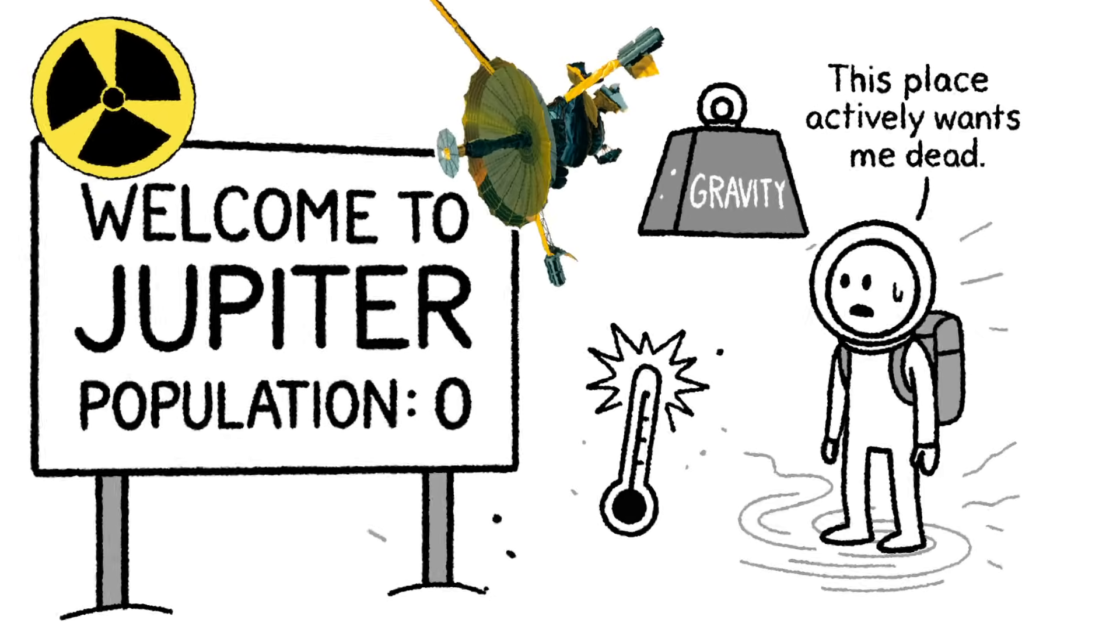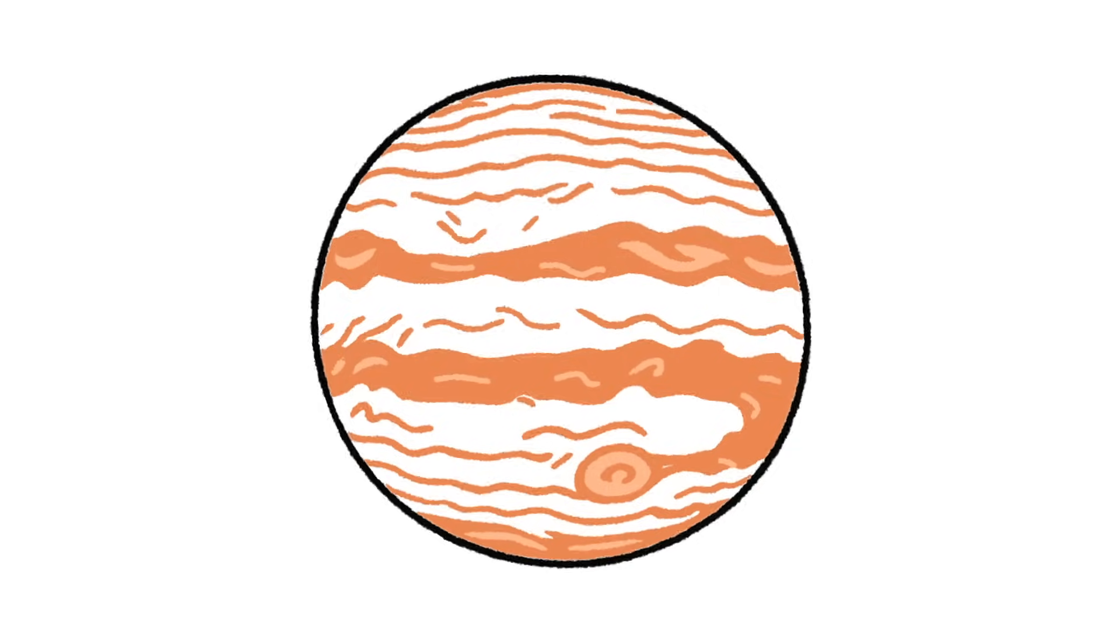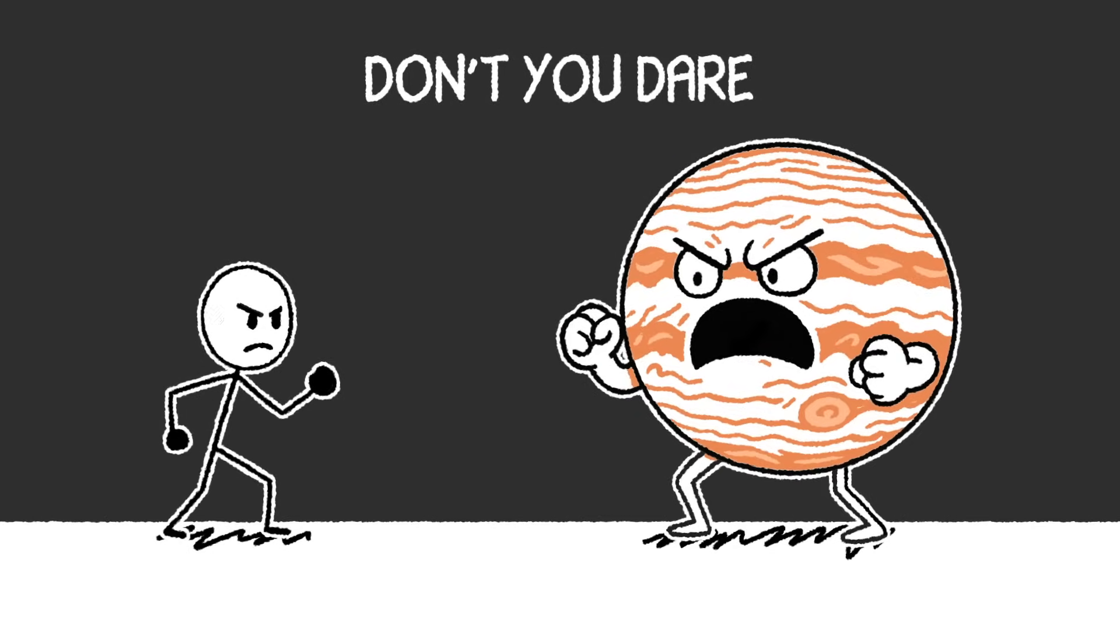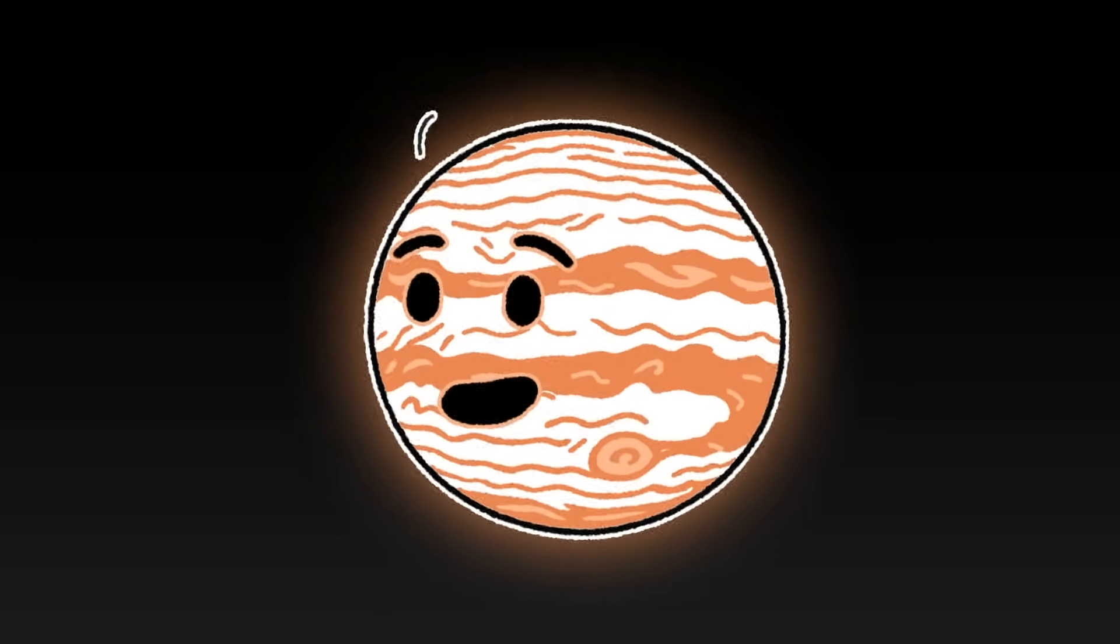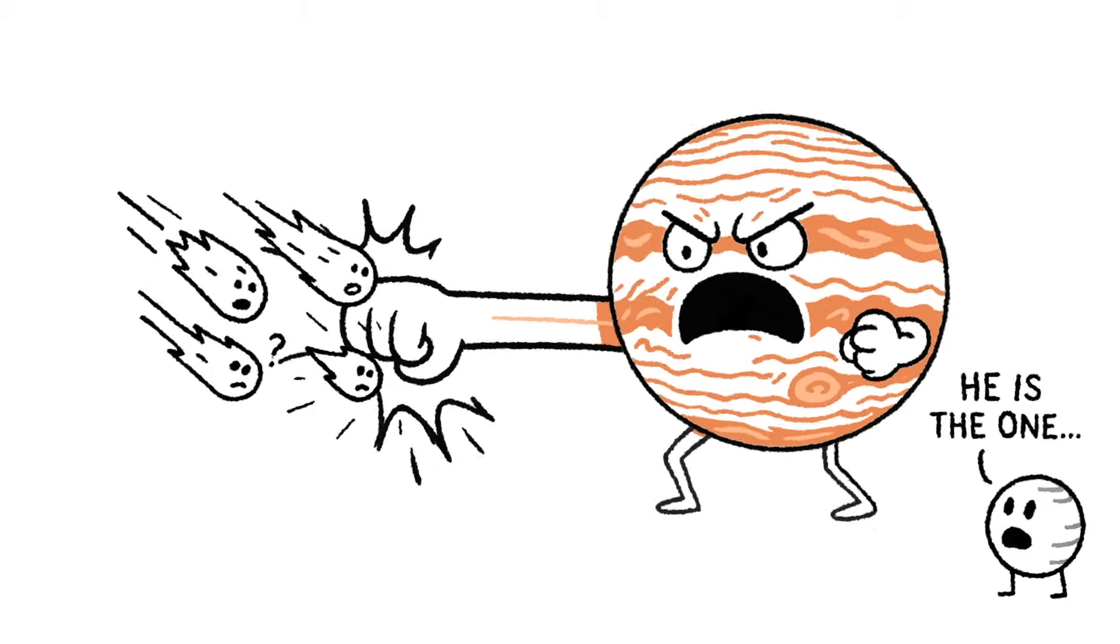Even the best NASA tech gets chewed up and spit out. Jupiter is like nature's way of saying, you can look, you can wonder, but don't you dare try me. And yet, it's beautiful. Jupiter shapes the solar system. Its gravity protects Earth by flinging deadly comets away. Its storms are accidents. Its moons might harbor life. It's a monster, yes, but it's our monster.